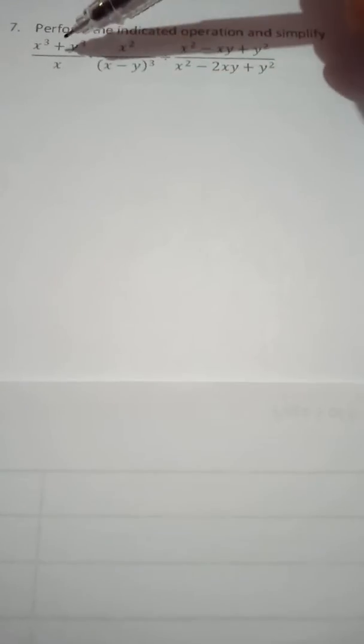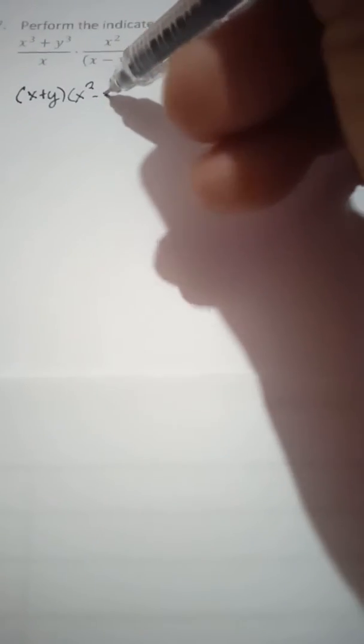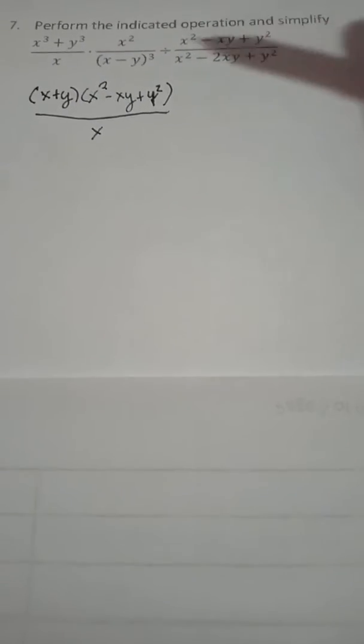So for example, x cubed plus y cubed, it can be factored. This can be written as x plus y times x squared minus xy plus y squared over x. Since this is a sum of 2 cubes, times x squared over,